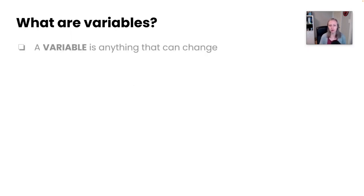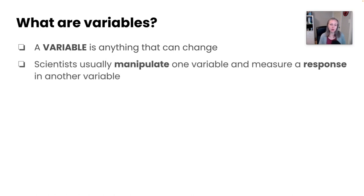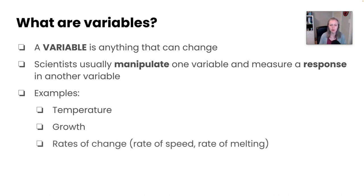So let's start out with what are variables. Well, variables are really just anything that you can change in a scientific inquiry process. Typically, scientists will usually manipulate one variable and then measure the response in another variable. Some examples of this might include things like temperature or growth, how high something's growing or the length of time it takes to grow to a certain height. It could be things like rates of change, how fast something is going, the rate of speed or the rate of melting, or it could be time. So these are all really great examples of types of variables.